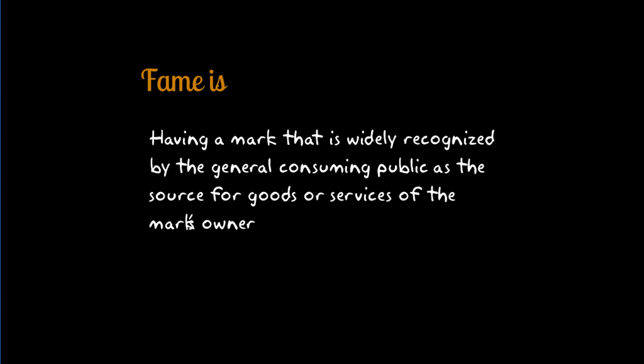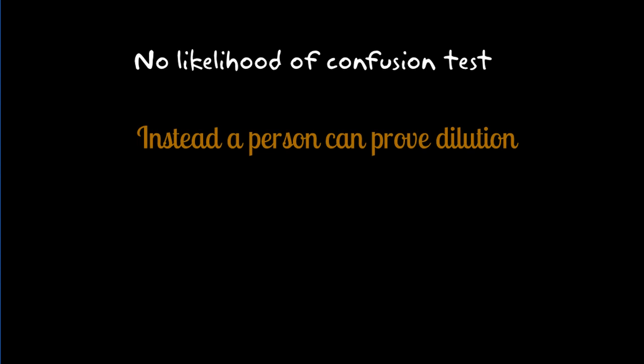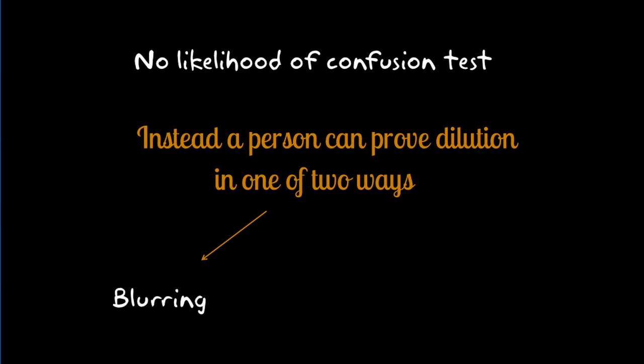A claim can be brought in most state courts even if the mark is not famous. The requirement is usually that the mark has selling power or a distinctive quality, and the two marks are substantially similar. Unlike in a trademark infringement claim, there is no need to establish a likelihood of confusion. Instead, the plaintiff can show dilution in one of two ways: through blurring or tarnishment. Blurring occurs when the power of the mark is weakened through its identification with dissimilar goods. Tarnishment occurs when the mark is cast in an unflattering light, typically through its association with inferior or unseemly products or services.